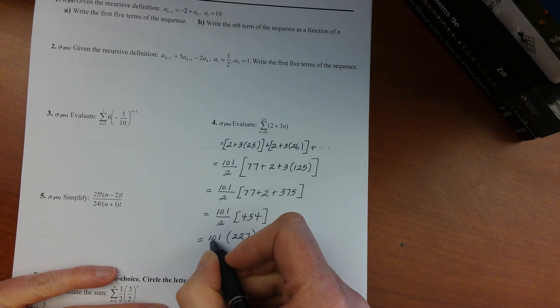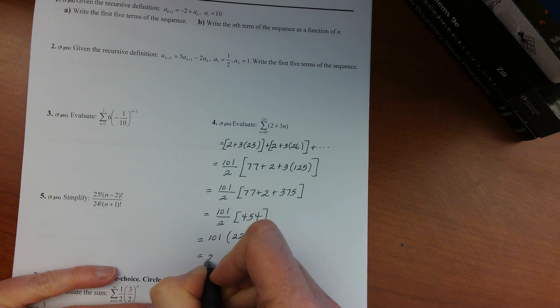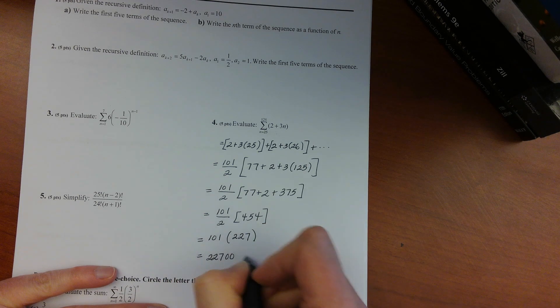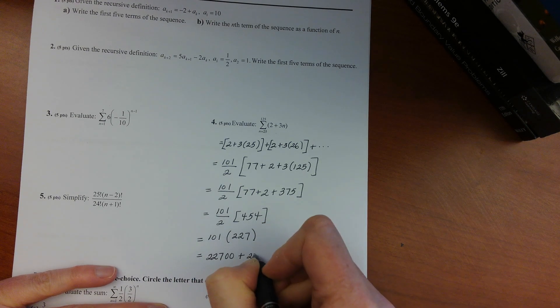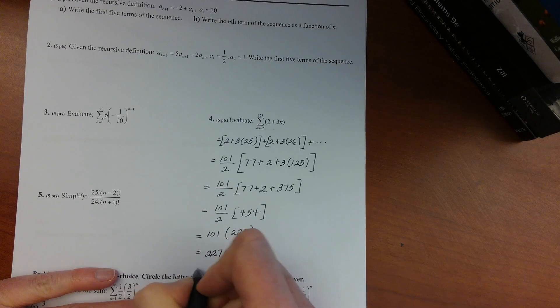And then 101 times 227, I personally would think of that as 100 227s, which would be 22,700, plus one more 227.